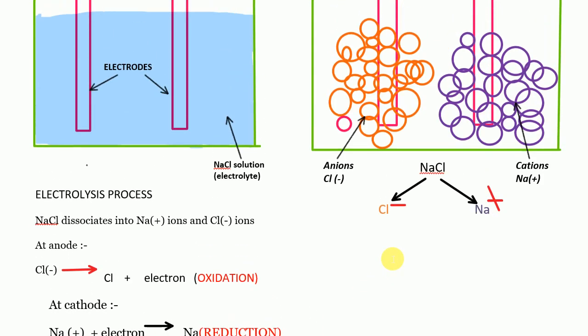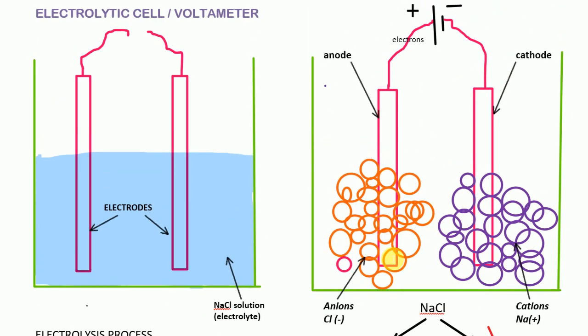The process in which these anions and cations are separated is known as electrolysis. This is what happens in the electrolytic cell or the voltameter. The electrons flow from anode to cathode. Since electrons flow from anode to cathode, current will always flow from cathode to anode, because electrons are negatively charged, while current is a flow of positive charges — so current flows in the opposite direction, from cathode to anode.